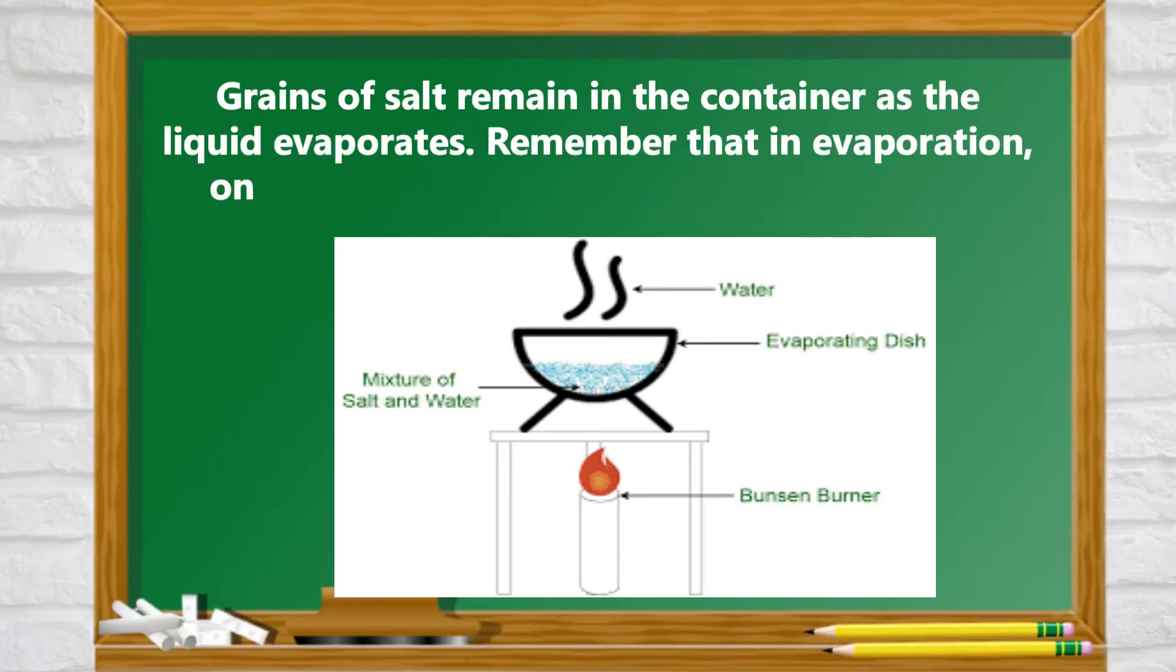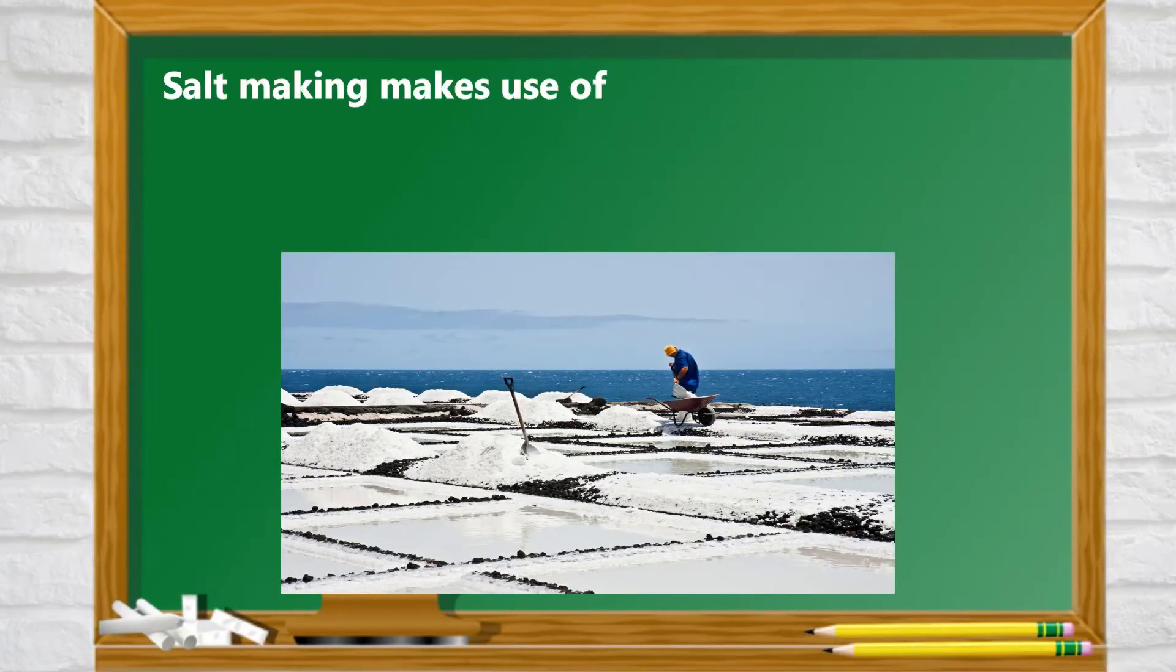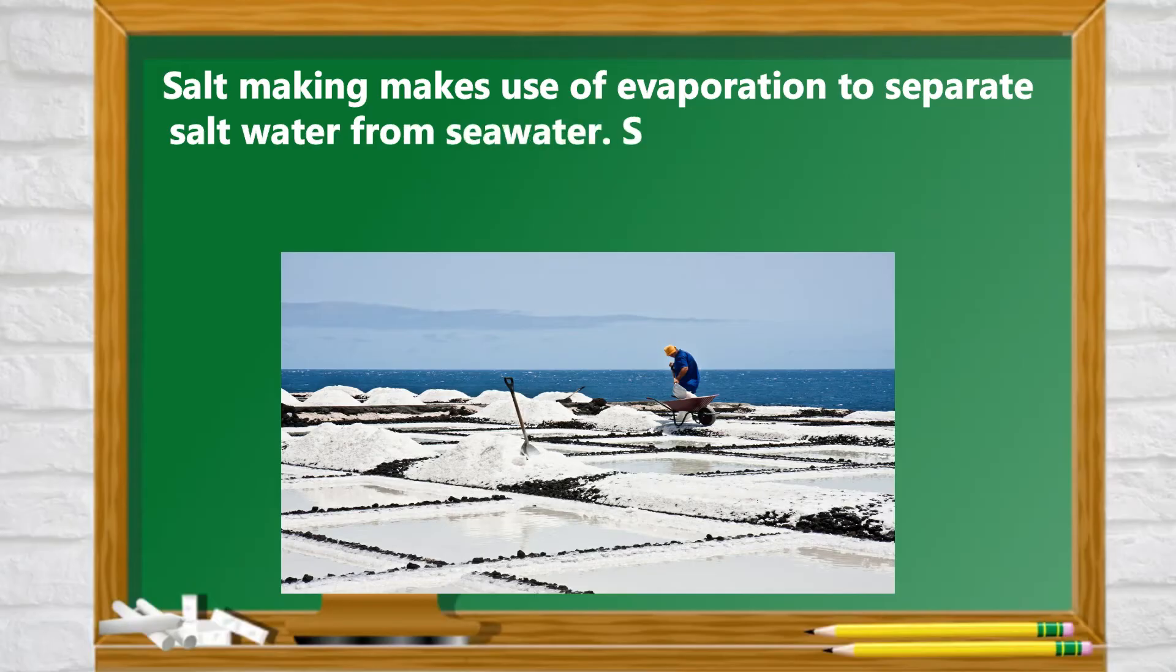Remember that in evaporation, only the solute is recovered, not the solvent. In the environment, many components of mixtures are separated by the evaporation process. When the sun heats the earth, water separates from other substances on earth and it becomes water vapor.